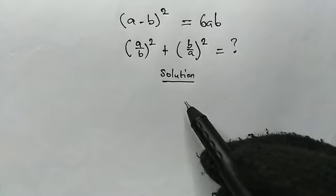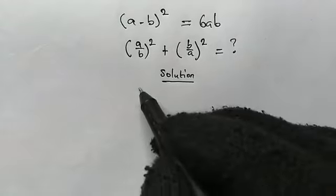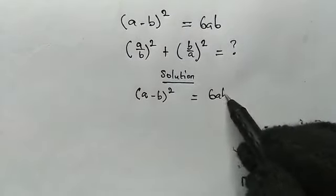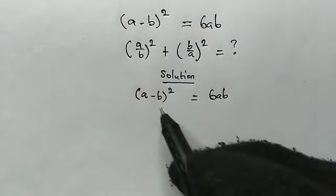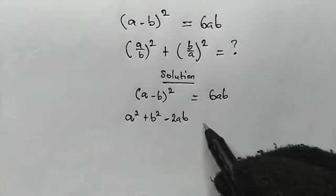From the given equation, let us expand the left-hand side. We have here (a - b)² which is equal to 6ab. Expanding this, this will give us a² + b² - 2ab, and this is equal to 6ab.